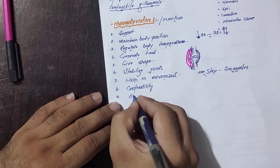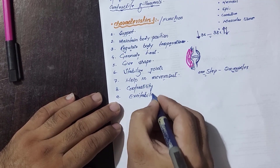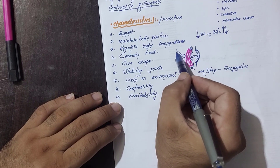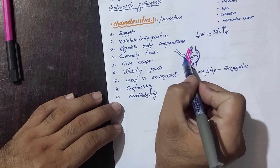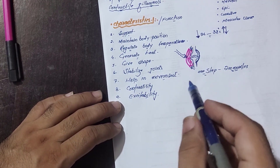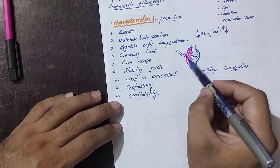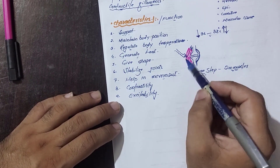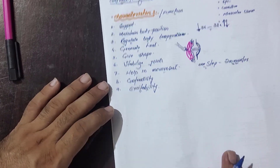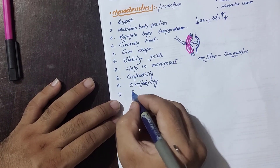Muscles also show excitability — this is very important. Nerves supply our muscles, and when these nerves release chemical mediators at the junctions, the muscles respond and act according to those chemicals. This property is called excitability.